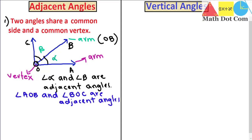It is not necessarily that adjacent angles are only in this form. They can also be adjacent in other ways — for example, if the angles are arranged like this, these two angles are also adjacent and so on. The condition is they should share a common vertex and a common arm or side.